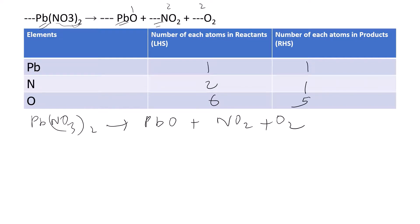Writing the equation Pb(NO₃)₂ gives PbO + NO₂ + O₂, we multiply NO₂ by 2 to balance nitrogen. This makes the oxygen count on the product side: one plus four plus two, giving seven. Since seven is an odd number, we need to multiply through by two to get an even number.